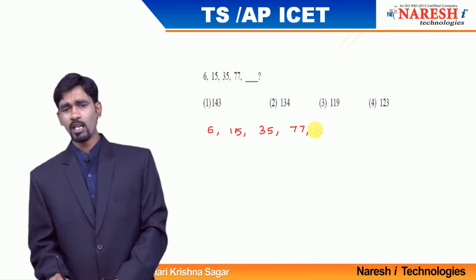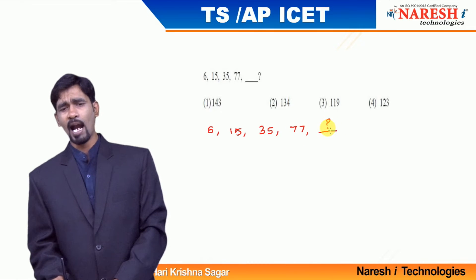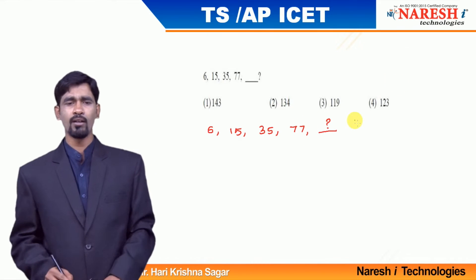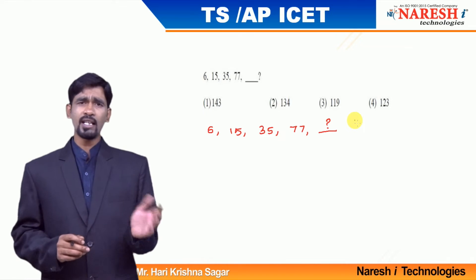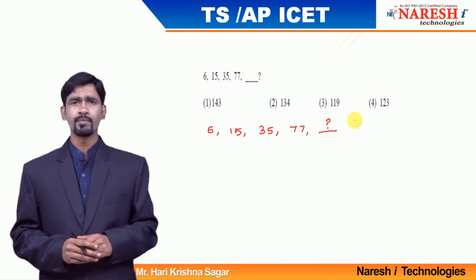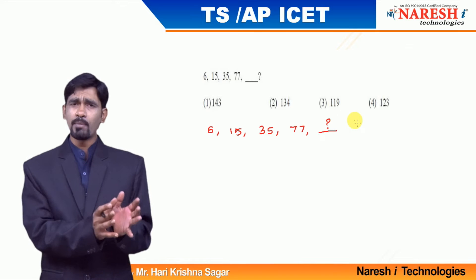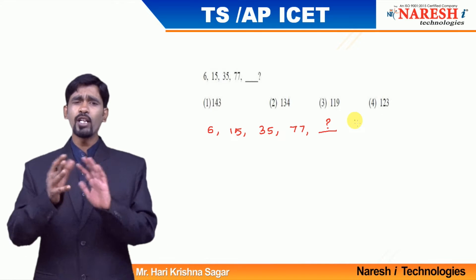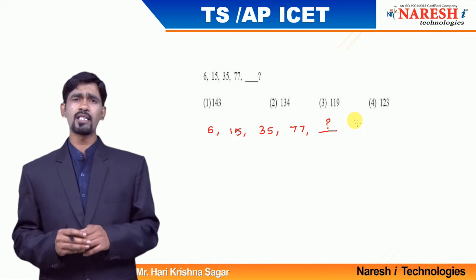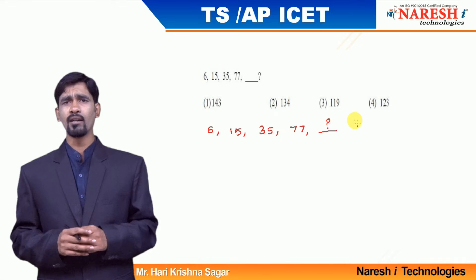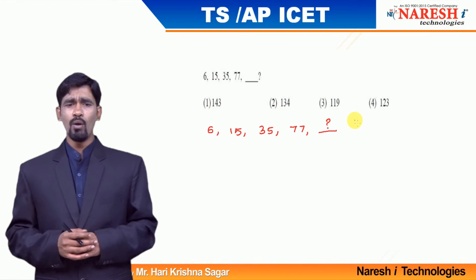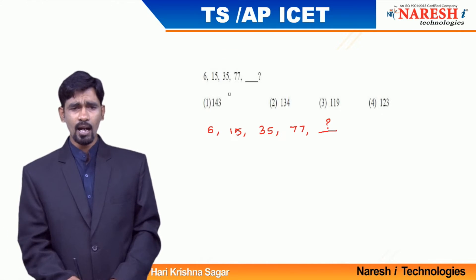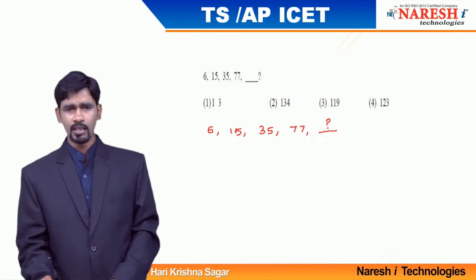I am trying to observe what is happening. By having a glance at the question, the numbers are approximately doubling. Actually, 6 into 2 is 12 and the next term is 15; 15 into 2 is 30, but I have a term which is 35; 35 into 2 is 70, and I have a term which is 77. By observing these numbers, I can understand that these numbers are doubled.